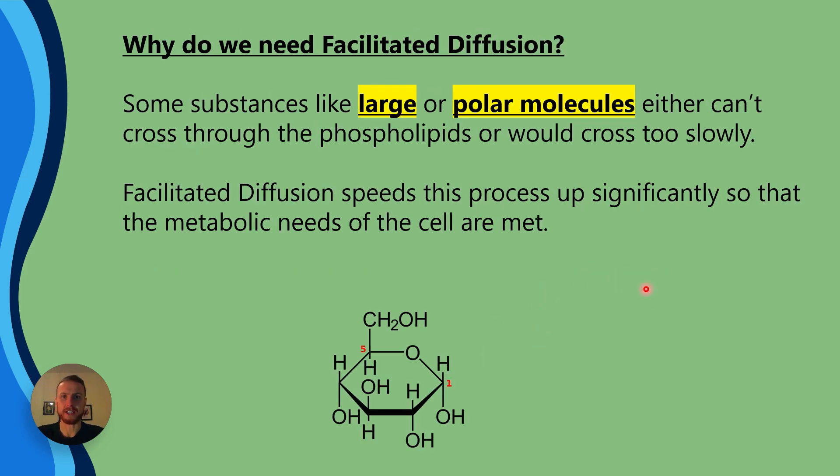Now, why do we need facilitated diffusion anyway? Some substances, which are those like large or polar molecules, meaning they have a charge, either can't cross the phospholipid membrane directly, or they do it at such a slow rate. Facilitated diffusion speeds this process up significantly so that the metabolic needs of the cell are met.